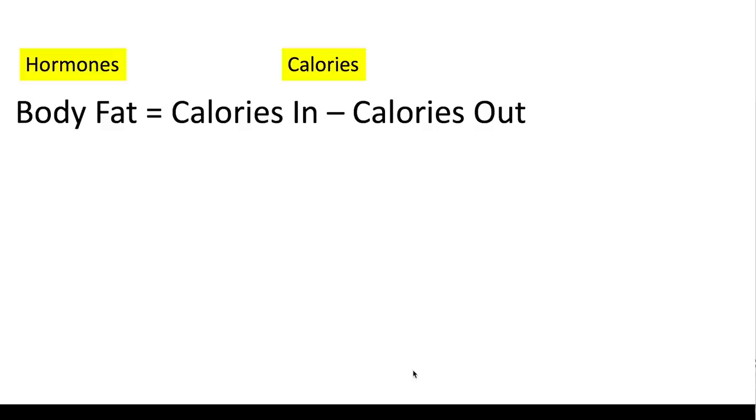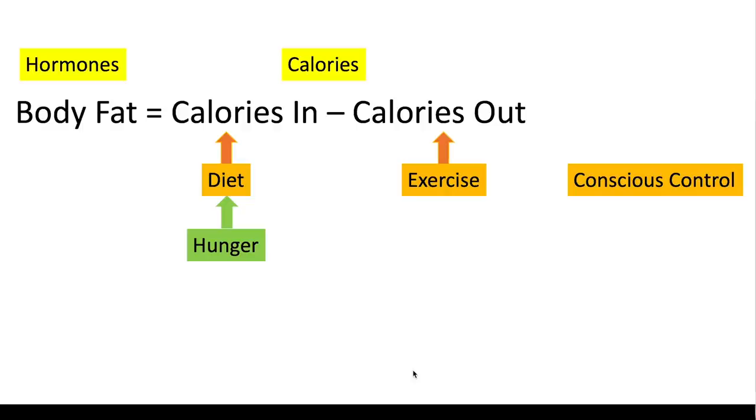You might say that it all depends on exercise and what you eat, so it's all under your conscious control, but it's simply not true. If you look at the main determinant of how much you eat, which is calories in, it is whether you're hungry. If you're hungry, you're going to eat more. If you're not hungry, you're going to eat less. So therefore the hormonal control of hunger is what is in fact the most important determinant of calories in, not willpower.